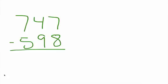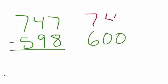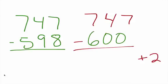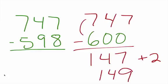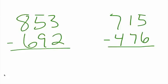We can also do this with three-digit numbers — three-digit minus three-digit numbers. So in this case, instead of going up to the nearest 10, we want to go up to the nearest 100. So we're going to bring 598 to the nearest 100, which is 600. And so we have 747 minus 600. How far did we go up from 598 to get to 600? We went up 2. We subtract — 7 minus 6 is 1. 147 plus 2 is 149. Looks a little bit daunting, but it really isn't.